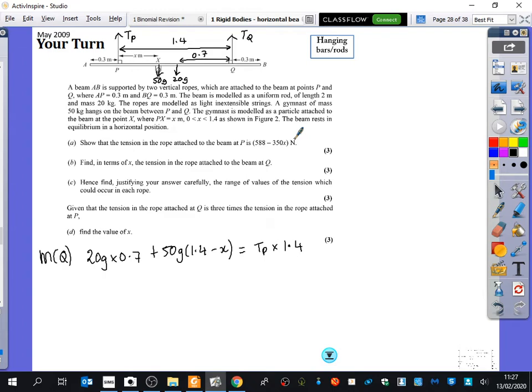20g times 0.7. So that's 137.2 plus 50g times 1.4. That's 686 minus 50gx equals 1.4TP.